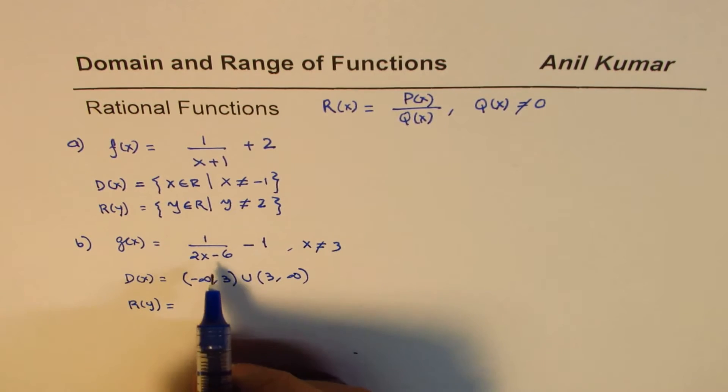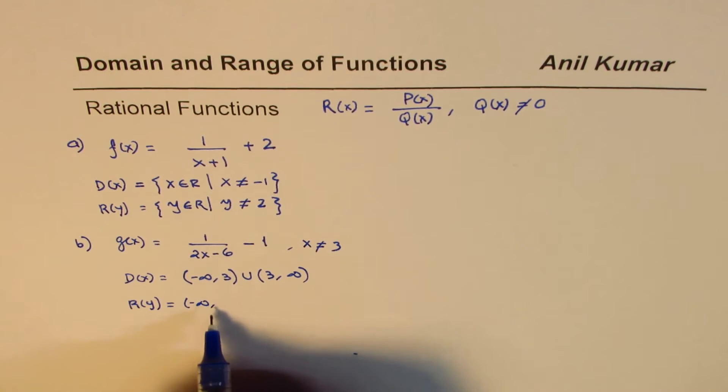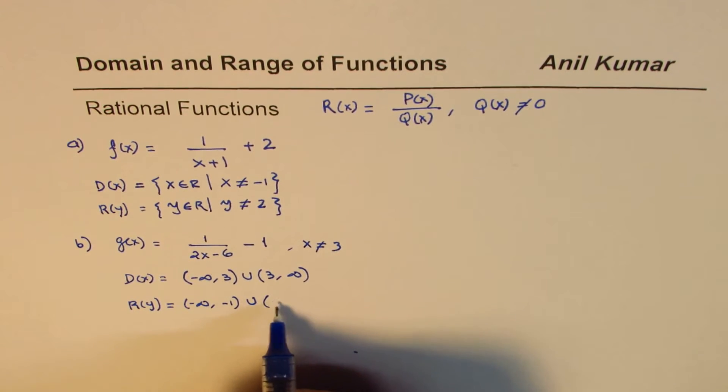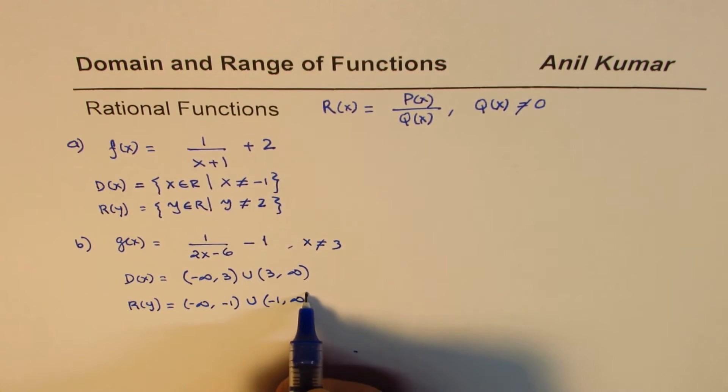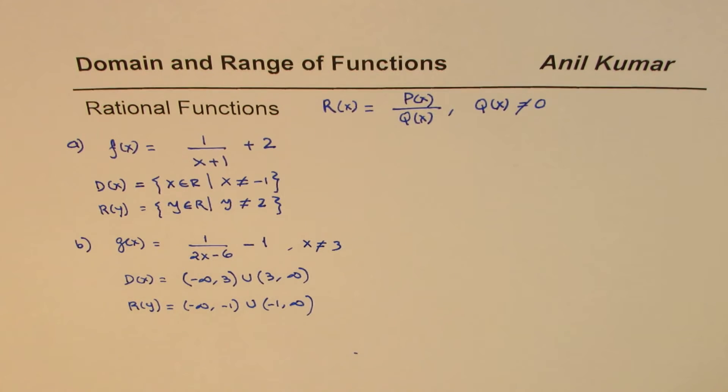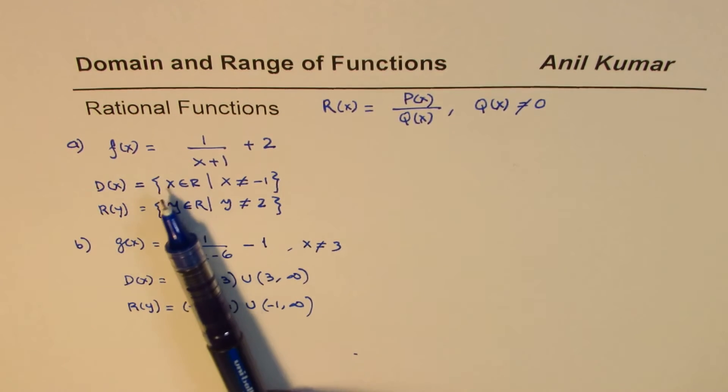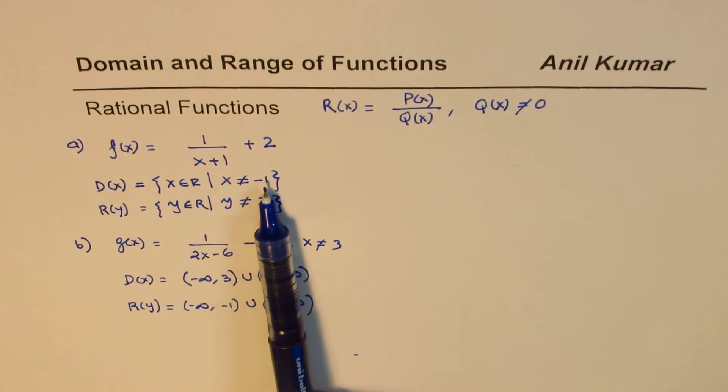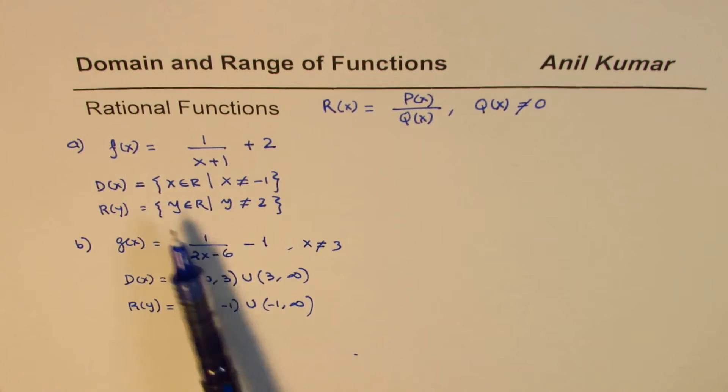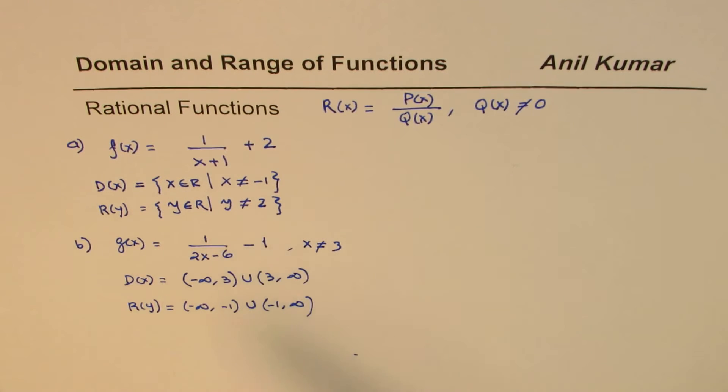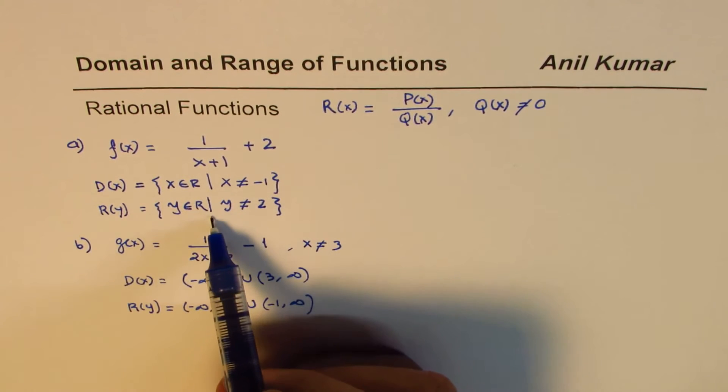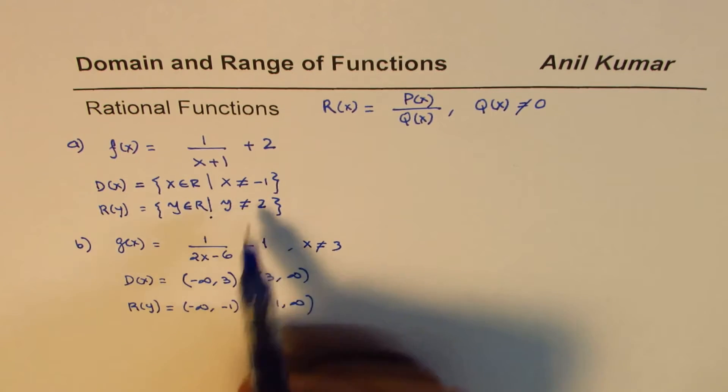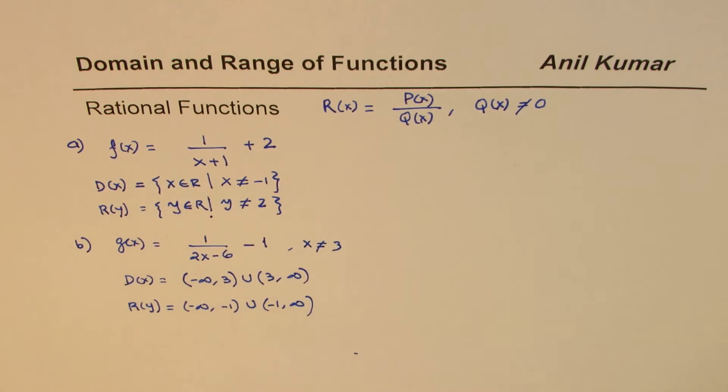How about the range for this function? The range for this function is this cannot be -1. So we can say that it's from -∞ to -1, union -1 to infinity. That is the interval notation. I use both notations for your benefit. This is in the set form, a set of x belongs to real numbers where x is not equal to -1. So y belongs to the set of real numbers, these curly brackets are set of, and this line is conditioned such that y is not equal to 2.